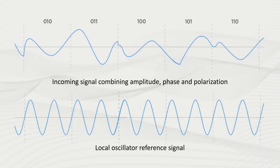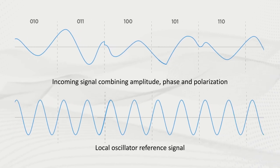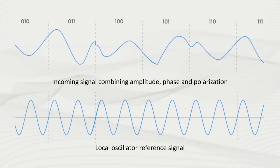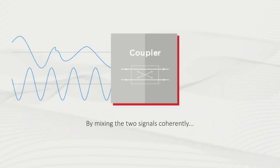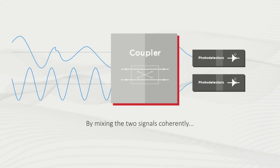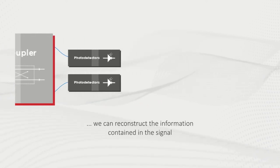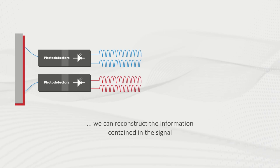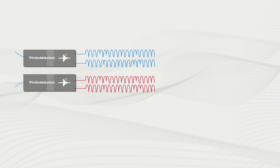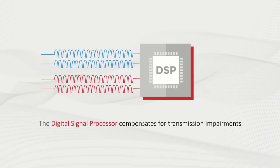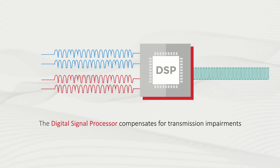We can detect this signal using a coherent receiver, which uses a reference signal generated by a local oscillator to compare with the incoming signal. By mixing the two signals coherently, we can reconstruct the amplitude and phase information per polarization. These reconstructed signals are fed into the digital signal processing algorithms to compensate for any transmission impairments such as dispersion and combine them into one high speed data signal.